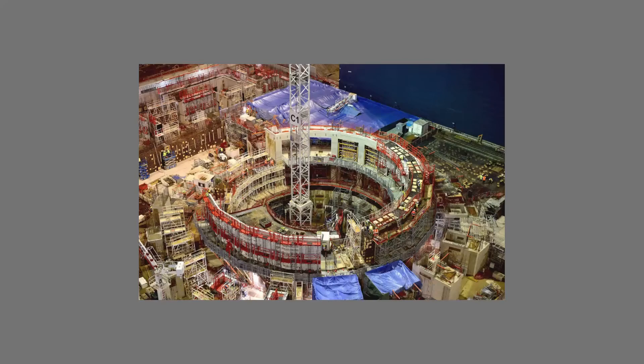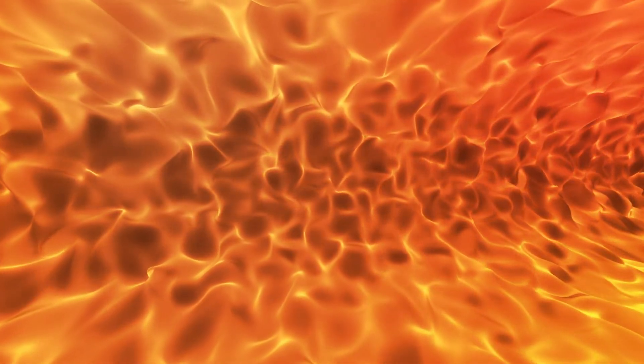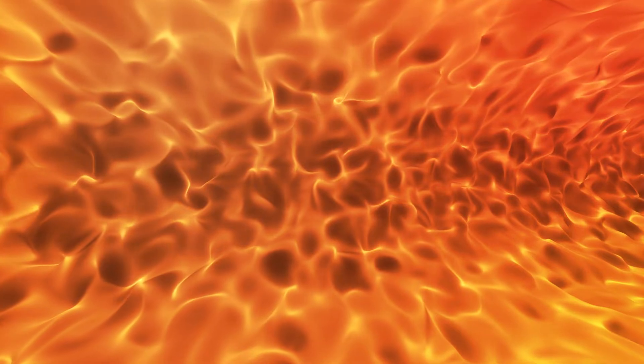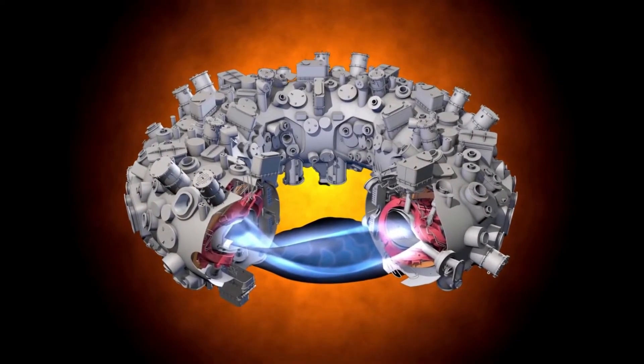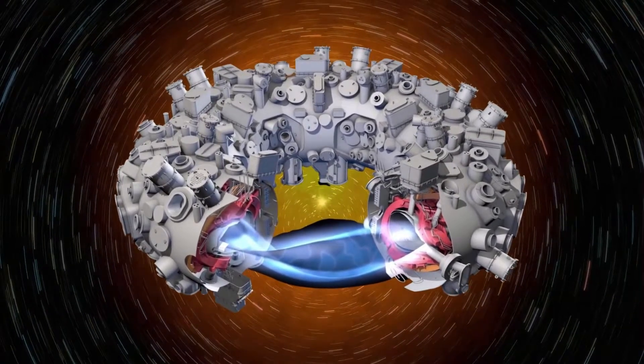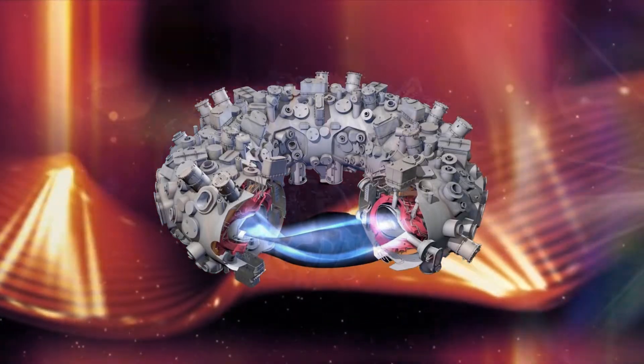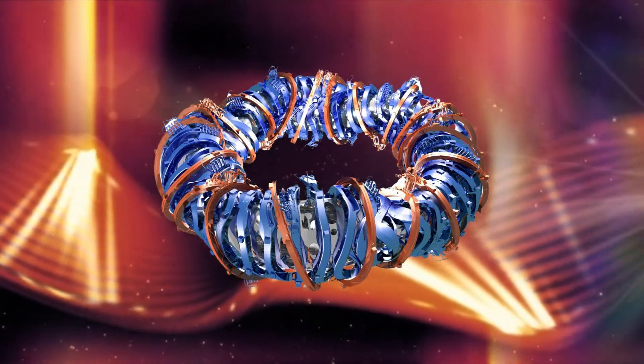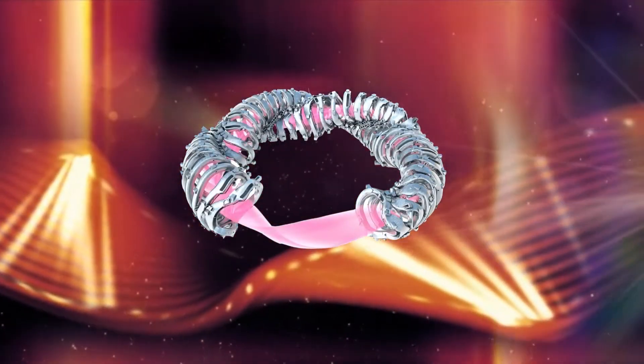A stellarator operates very similarly to a tokamak, employing enormous superconducting magnets to sustain hydrogen plasma and heat it to the pressures and temperatures necessary to fuse the material into helium. Additionally, the Wendelstein 7X stellarator is constructed of about 50 superconducting magnet coils, ranging in height from 3.5 to 4 meters. The plasma in the stellarator is locked in a twisting and swirling configuration, as opposed to the torus or donut formation seen in a tokamak.